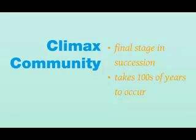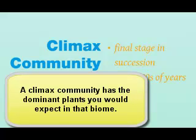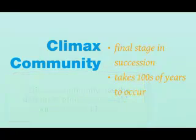At the end of either primary or secondary succession you get what's called a climax community. A climax community is the final stage in succession — it's what you think of as the typical plants for that type of biome. Where we live in a temperate deciduous forest, our climax community would be hardwood trees like maples and oaks with very few softwood trees like pines mixed in. But to get to a climax community it takes hundreds of years.